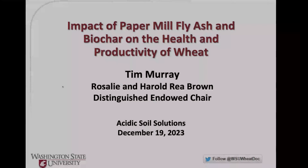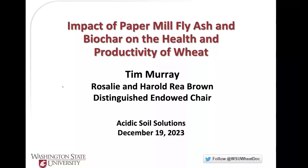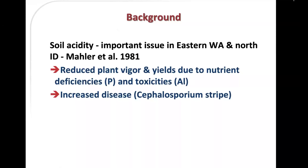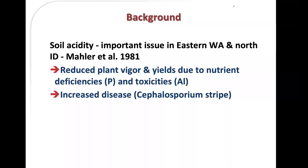The topic of soil acidity is clearly an important issue. This goes back to about 1981, when Bob Mahler at the University of Idaho was the first one I remember publishing a paper on soil acidity. He had done a survey of soil test lab results over about a 40-year period for Eastern Washington and North Idaho, and showed clearly that soil pHs were declining.